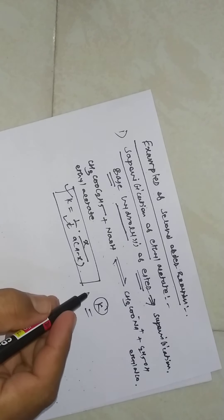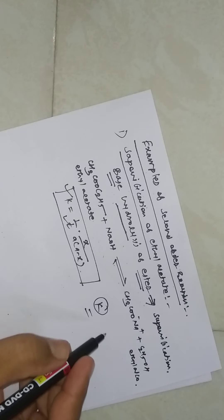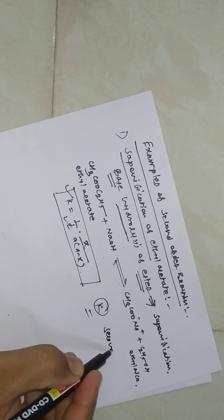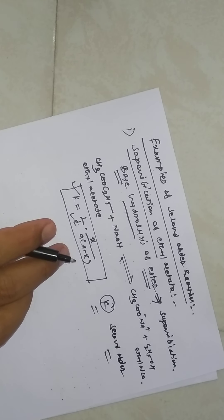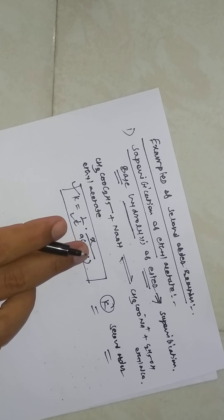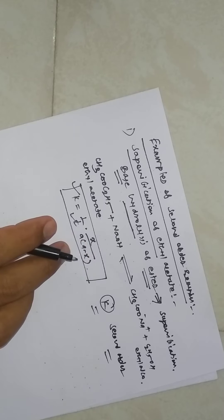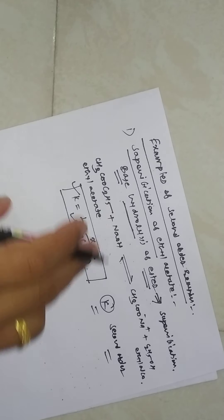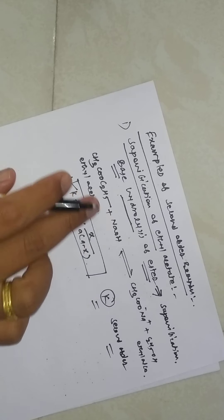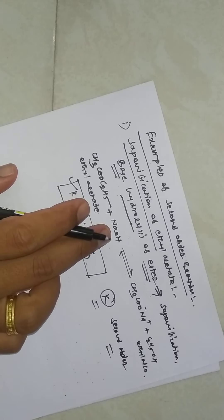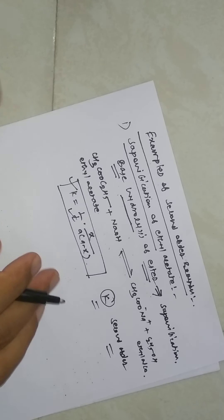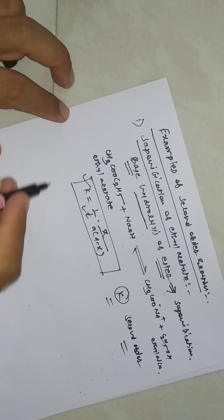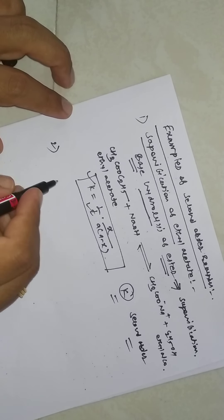Because the rate constant values are constant, the order of reaction is second order. So saponification of ethyl acetate is a second order reaction — the rate of reaction depends upon the concentration of both molecules: NaOH and ethyl acetate. This is the first example.